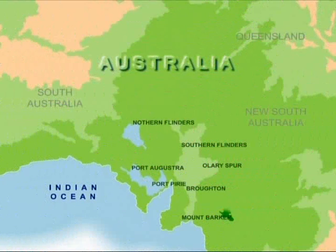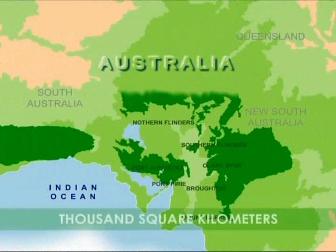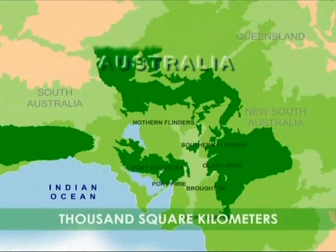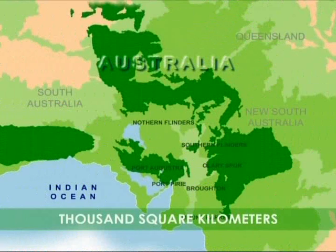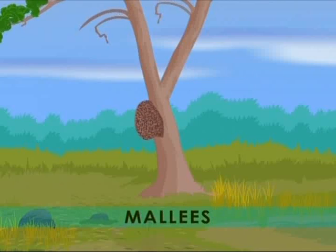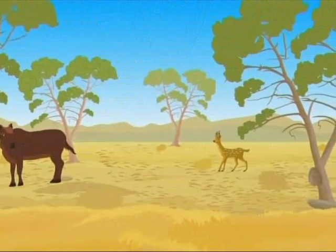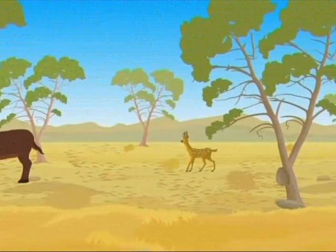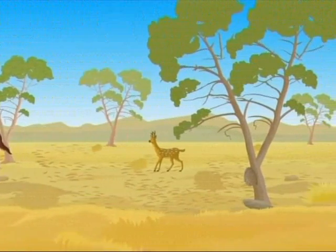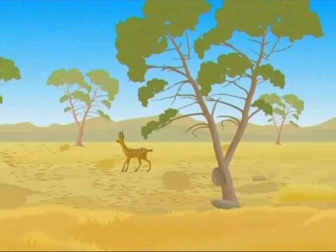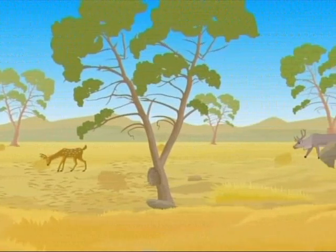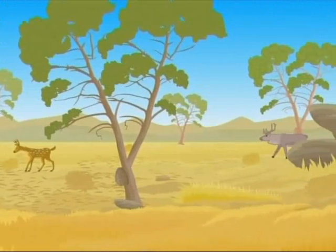Here Mali shrubland covers thousands of square kilometers. Mali's are gum trees that are small with twisted stems. They may not be the most beautiful plants, but when it comes to staying alive in harsh conditions, they surely come out as winners.